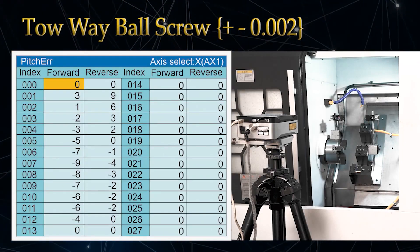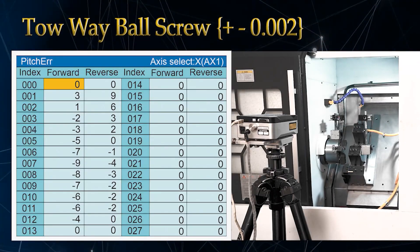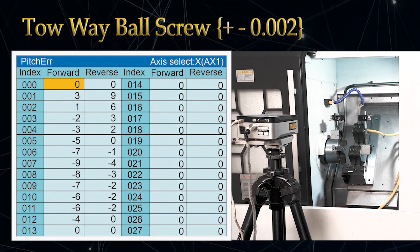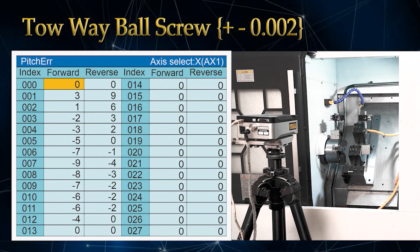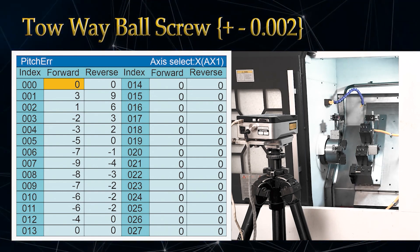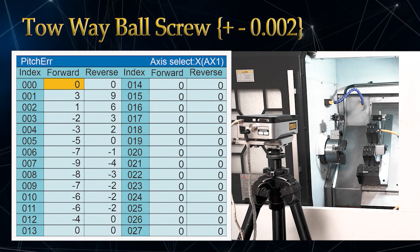Two-way ball screw with ±0.002 tolerance. X and Z axis mapping laser calibration is done by doing reverse, forward, up, and down movements. Because of that, ball screw backlash becomes zero.